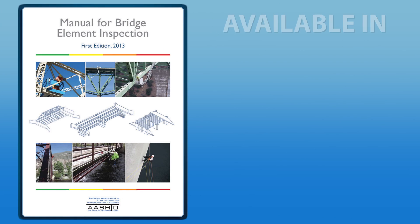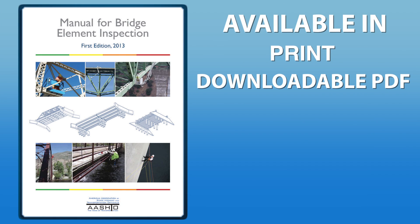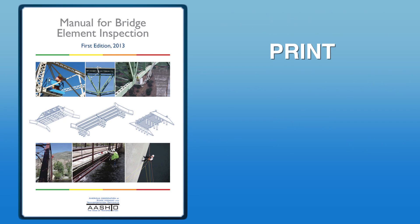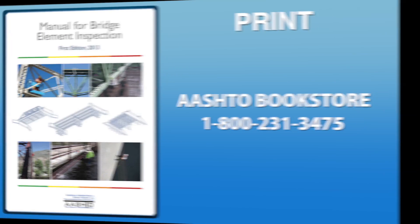The 258-page manual is available both in print and as an online downloadable PDF at a cost of $192. The cost to AASHTO member organizations is $160. To order a print copy, call the AASHTO Bookstore by dialing 1-800-231-3475.